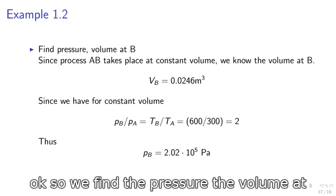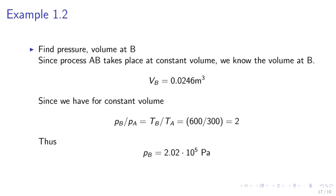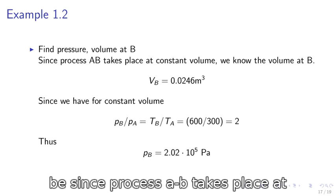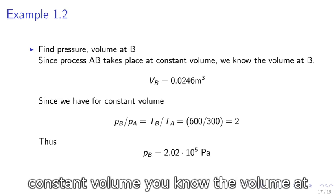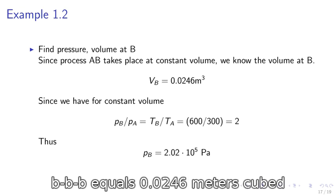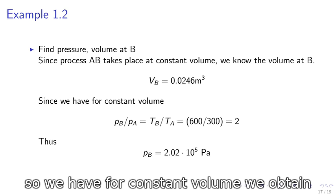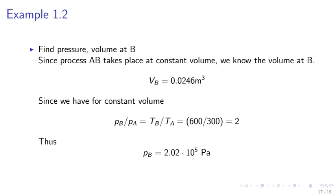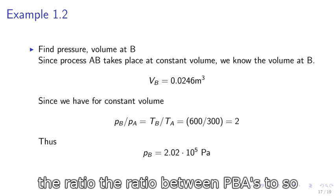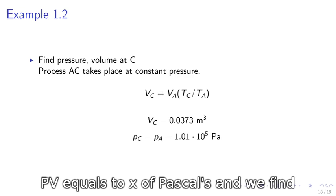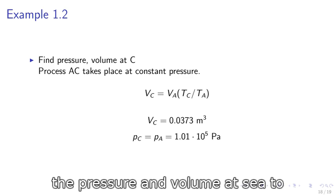We may find the pressure and the volume at B. Since process AB takes place at constant volume, we know the volume at B. VB equals 0.0246 meters cubed. For constant volume, we obtain the ratio between PB and PA is 2. So, PB equals 2 times 10 to the 5th Pascal.